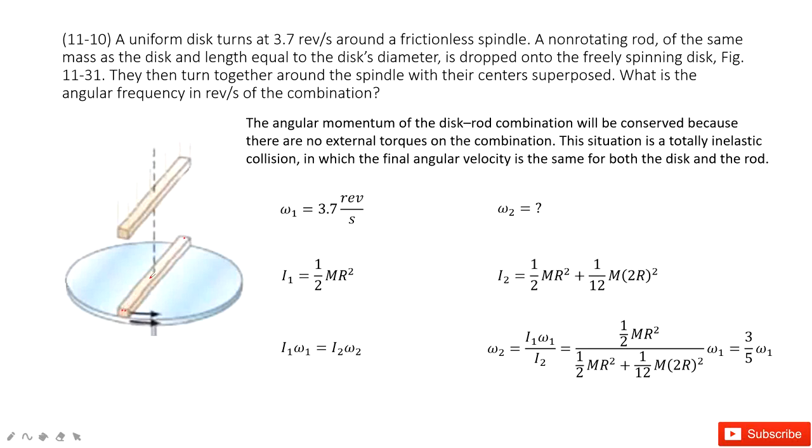For this rod, we can see it rotates at the center of mass. So this is 1 over 12 M, and then the length for this rod is 2L, and then squared.